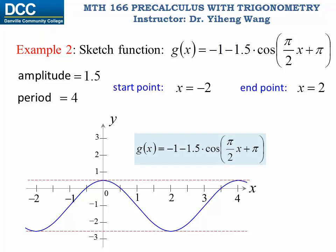I would always encourage you to double-check to see if you have the transformation correct. You can simply plot a point. In this case it looks like when x = 4, the function value is 0.5, so I'll leave it to you to verify that g(4) = 0.5.